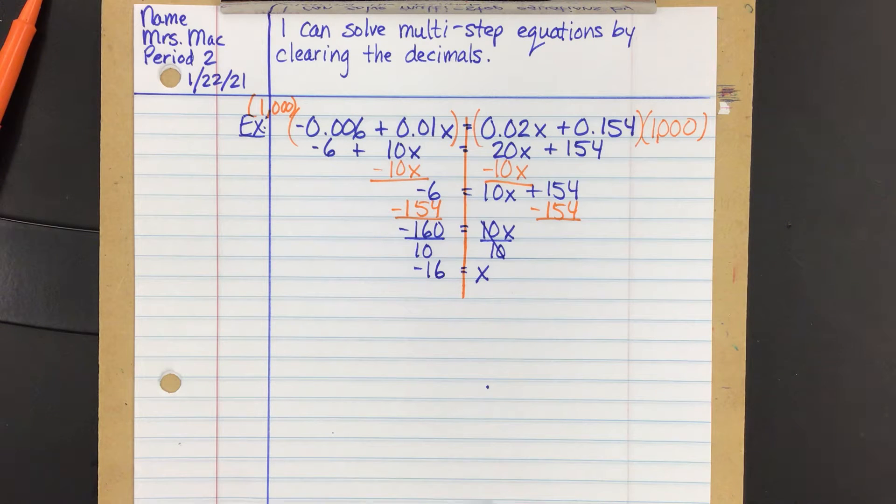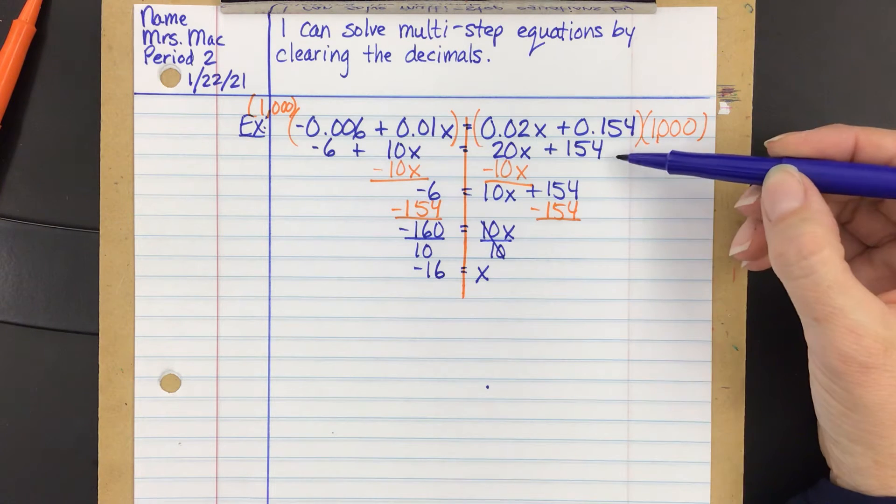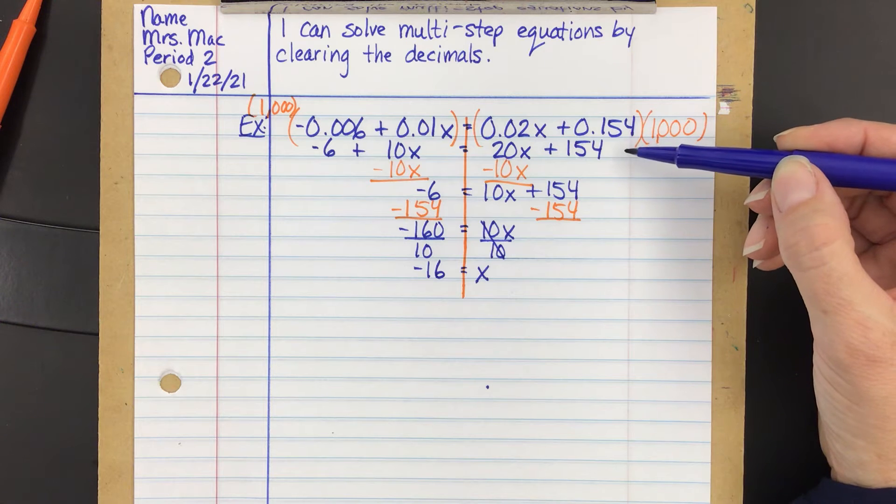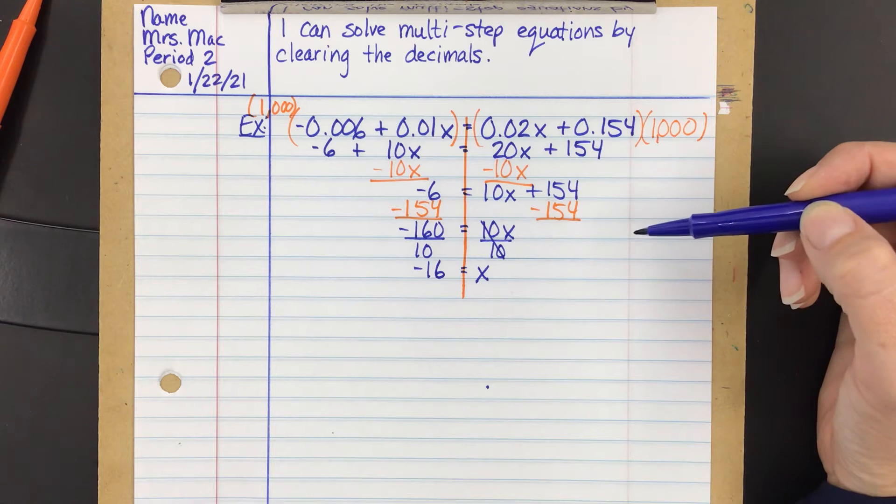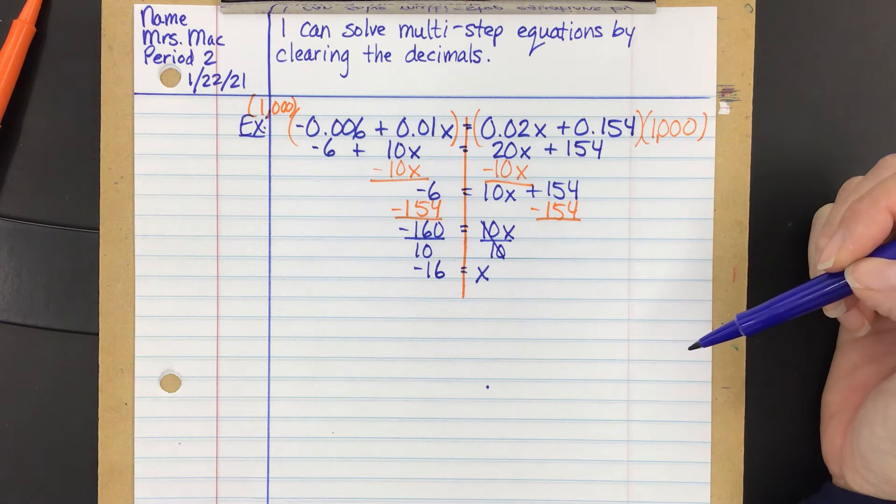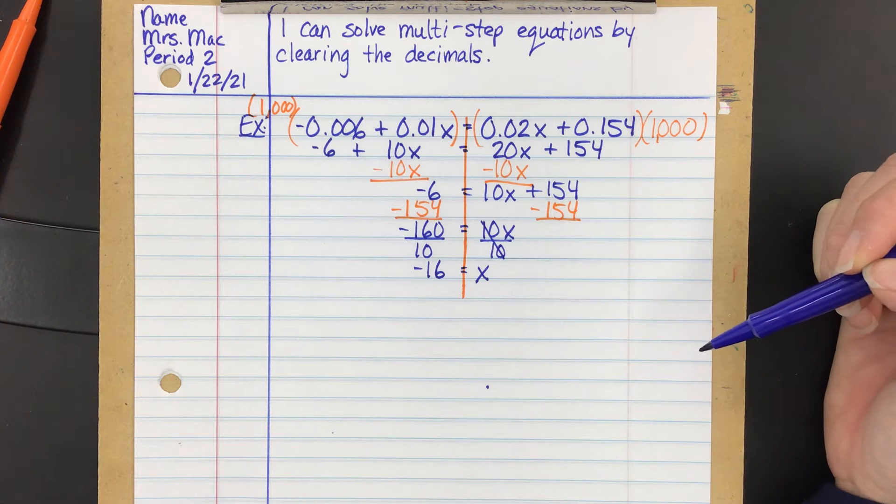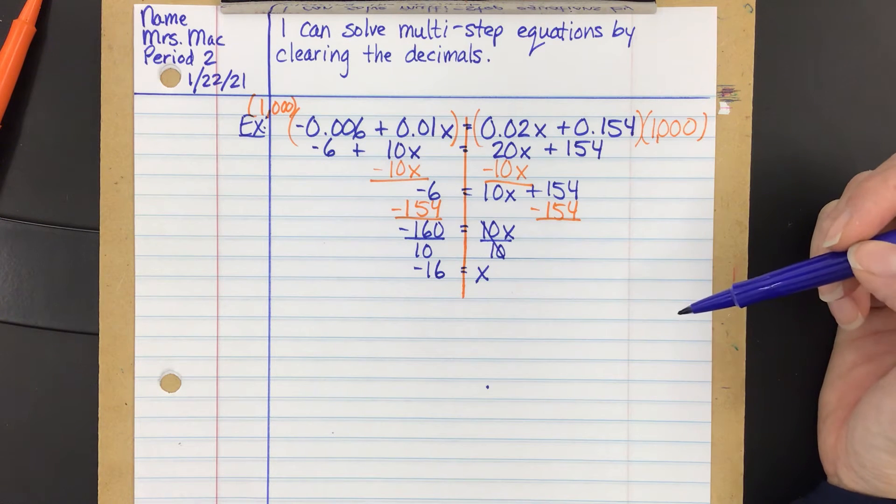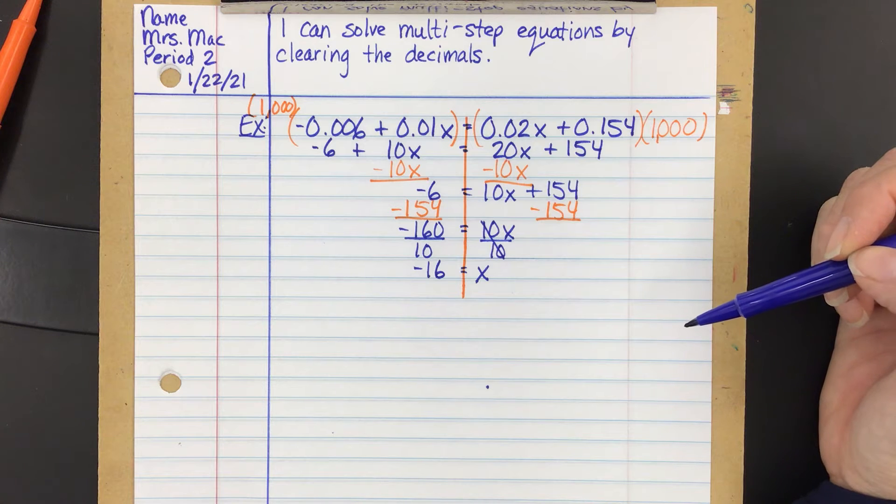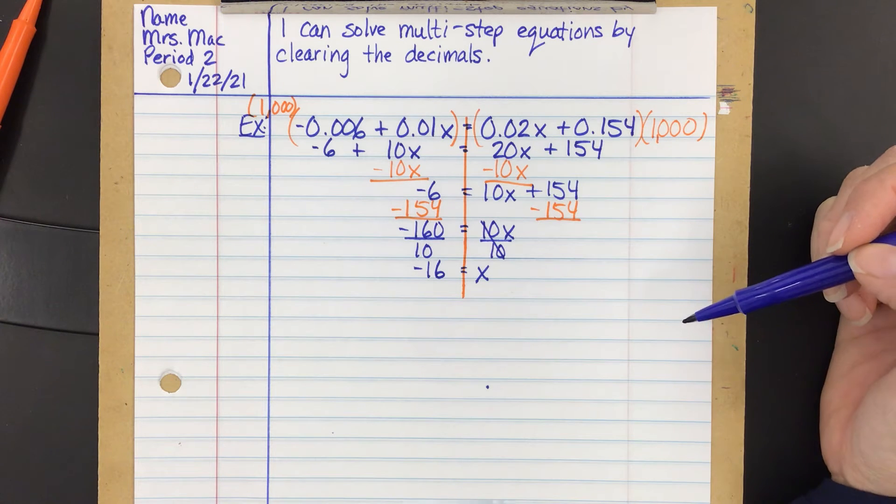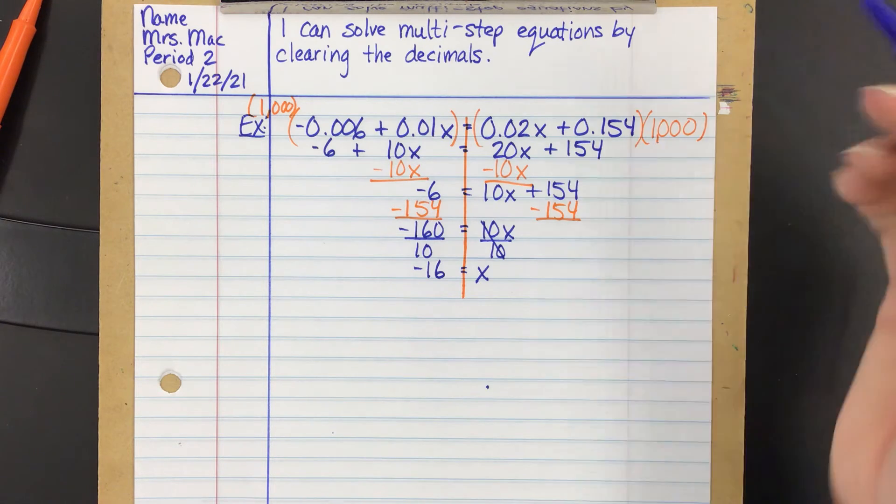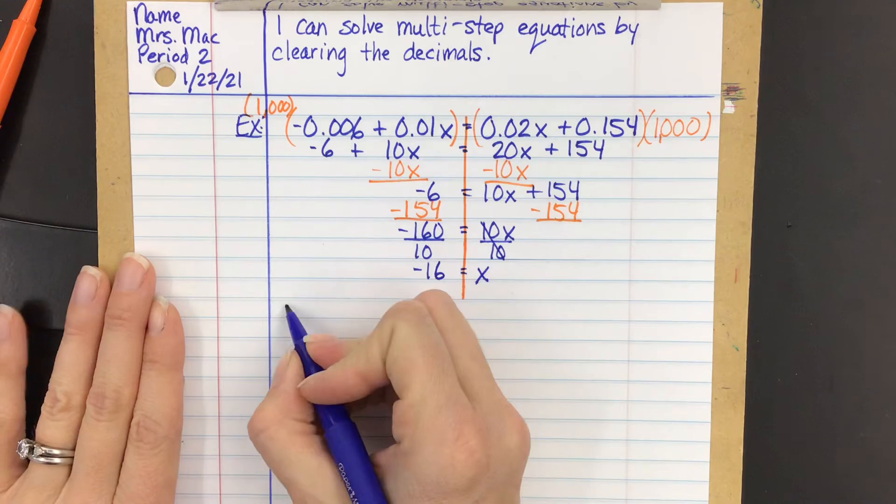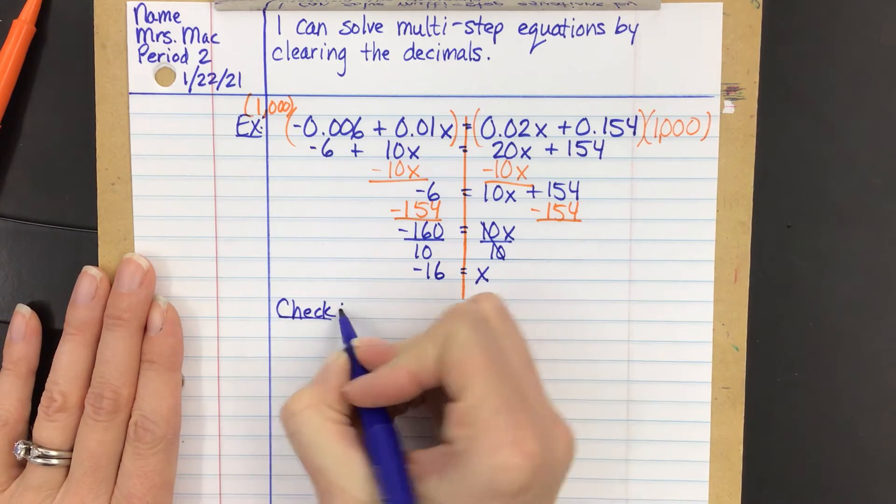Now, the only sticky thing about this is the checking your solution portion of this. Because we wouldn't want to plug it in after we've cleared the decimals because you may have made a mistake when you did that. And then it would seem like your answer was correct when actually it's not. So whenever we check an answer, we plug it into the original one, which means we're going to have to deal with some decimals. So I would recommend that if you are crunched for time, like you're taking a quiz, I would go through and solve everything first. And if you have time, go back and check your answers. Okay? But I'm going to walk you through the check portion just to make sure we did this correctly.